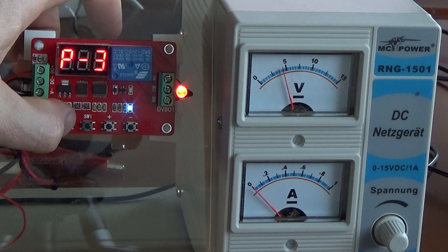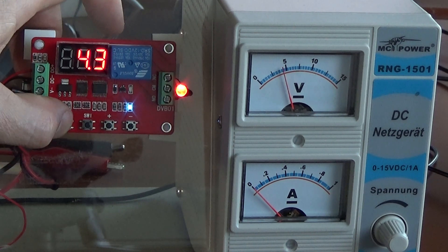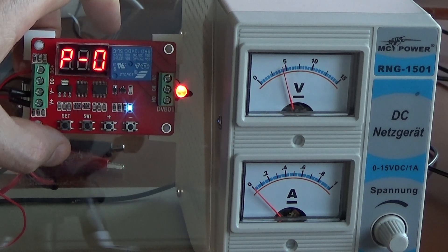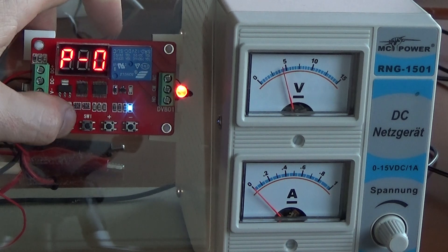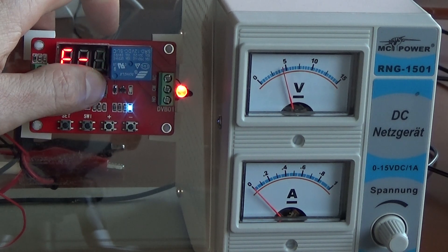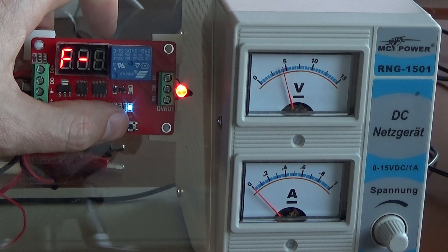If I want to set the function, I will just enter the menu again by pressing set. I am now in program zero, which is inactive. I click once on set and now it is in function number one. I can change the function by clicking plus or minus.